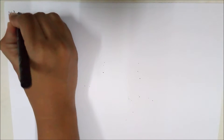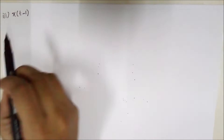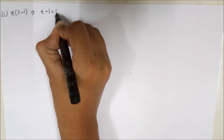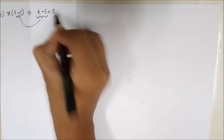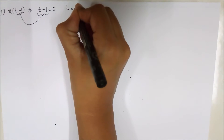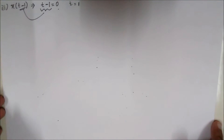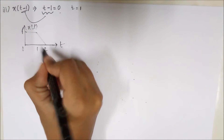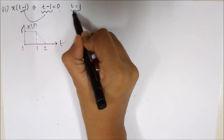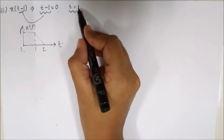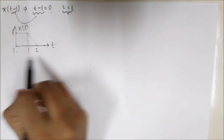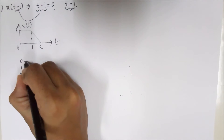The third part is x(t-1). In this type of question we equate the expression inside the bracket to zero. So t minus 1 equals 0 gives t equals 1. This means on the time axis our origin has shifted to 1. We add this value 1 to all values on the time axis: we have 0, 1, and 2, so we add 1 to each.